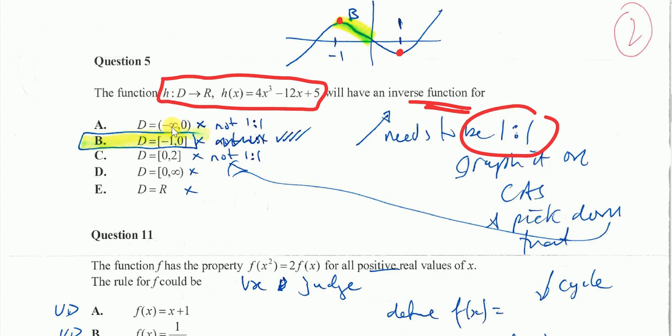Now this one, minus infinity to 0, goes all the way to 0, therefore is many to 1. Negative 1 to 0 is great, because it's just in here, and negative 1 to 0 domain, does give you 1 to 1, and I like B. 0 to 2 goes from 0 to 2, therefore it's many to 1. 0 to infinity is also many to 1, and all numbers is many to 1. So B is the only one.